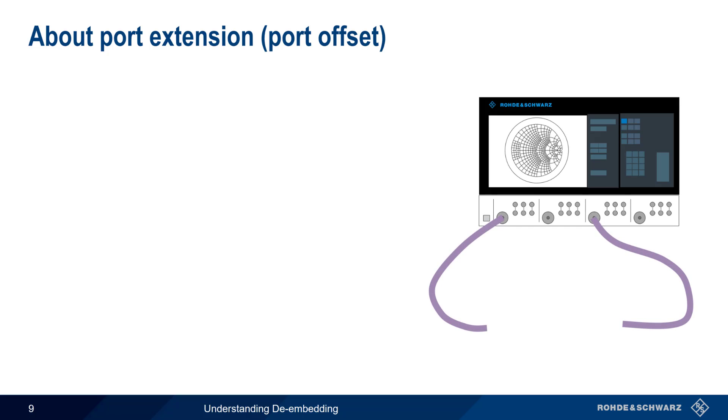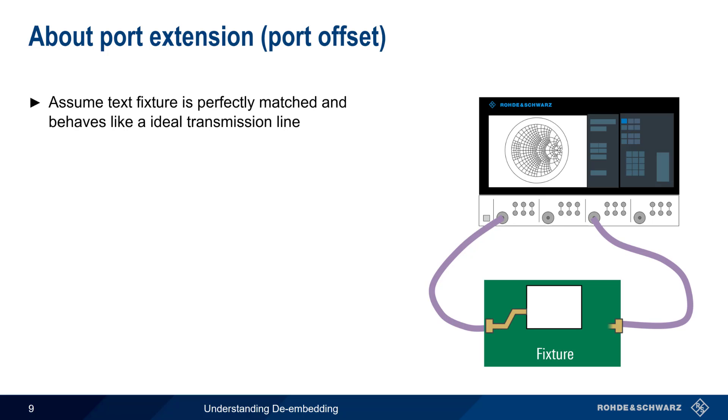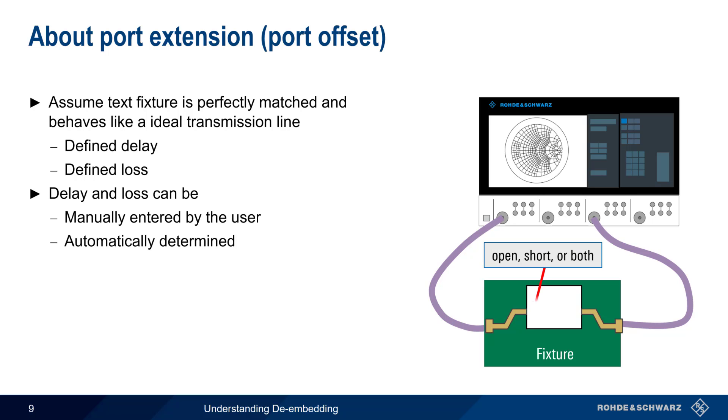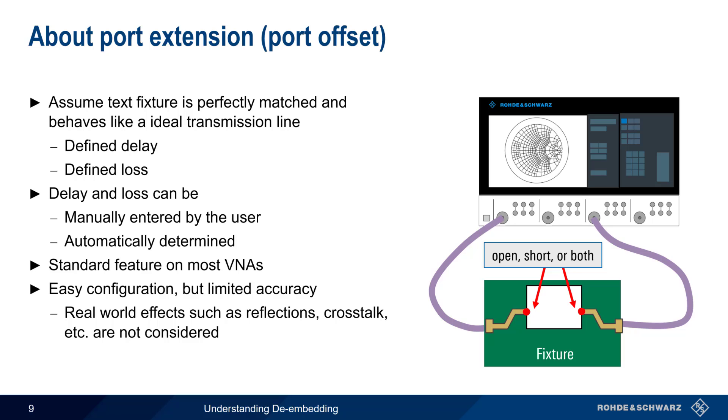We'll start with something called port extension, or port offset. The reason this methodology is called port extension is that we assume the test fixture is perfectly matched, and that it behaves like an ideal transmission line. The fixture is treated like an extension of the VNA cable, with a defined delay and a defined amount of loss. The amount of delay and loss introduced by these extensions may be manually entered by the user, or they may be automatically measured and determined by the VNA. This is done by placing an open, short, or both at the connection points. Port extension is a standard feature on most VNAs. It's relatively easy to configure, but accuracy is somewhat limited due to the fact that real-world effects like reflections, crosstalk, etc. are not considered in this methodology.